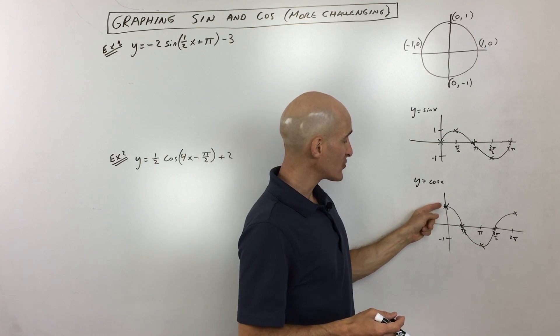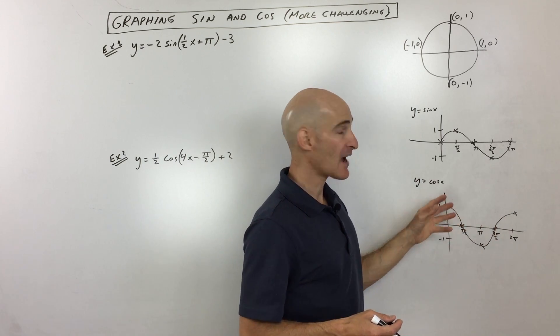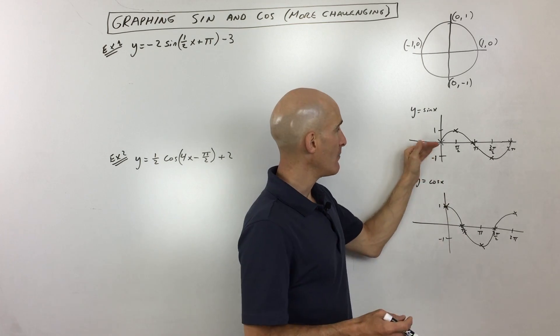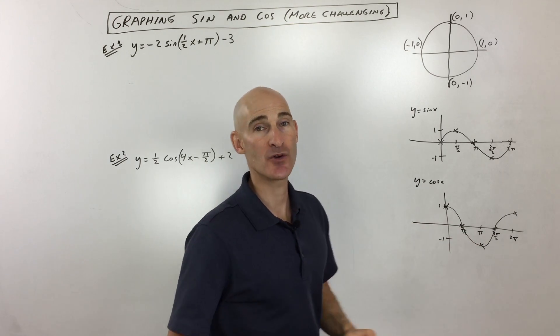But with cosine, cosine starts at the maximum, goes to zero, minimum, zero, max. So if you can kind of remember, they have the same shape, but sine is starting at this midline, whereas cosine is starting at the maximum. So you're with me so far.